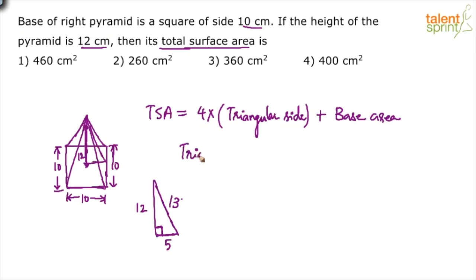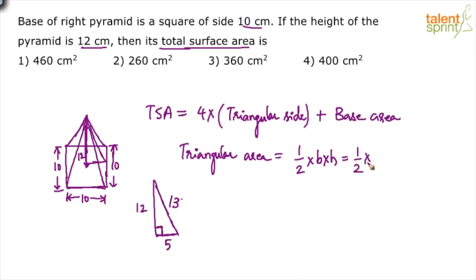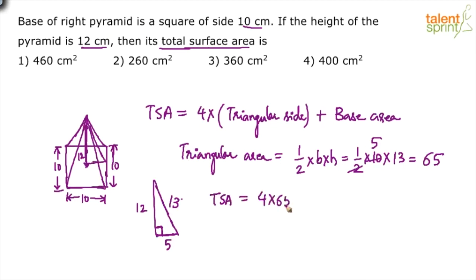The area of one triangular face equals half times base times height, where the base is 10 and the height is 13. That gives half times 10 times 13 equals 65. Now the total surface area equals 4 times 65 plus the base area of 100, so 260 plus 100 equals 360.